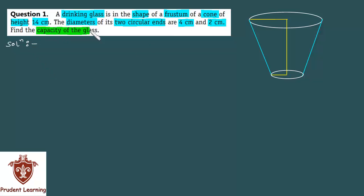Find the capacity of the glass. Here in this question we are given a drinking glass which is in the shape of a frustum of a cone having height 14 cm, diameter of the upper circular end is 4 cm that is its radius must be 2 cm and diameter of the lower circular end is 2 cm that is its radius must be 1 cm.